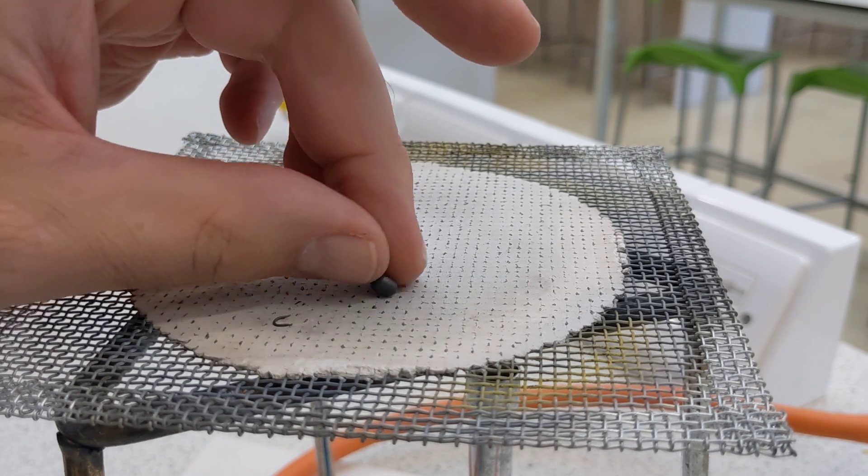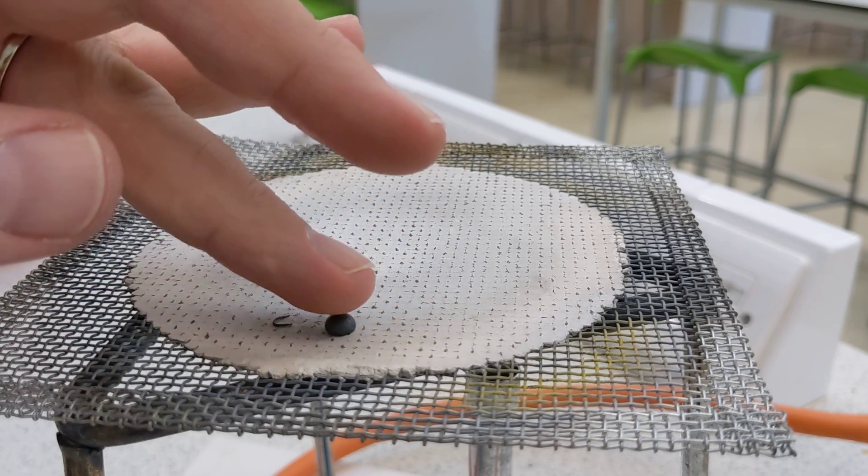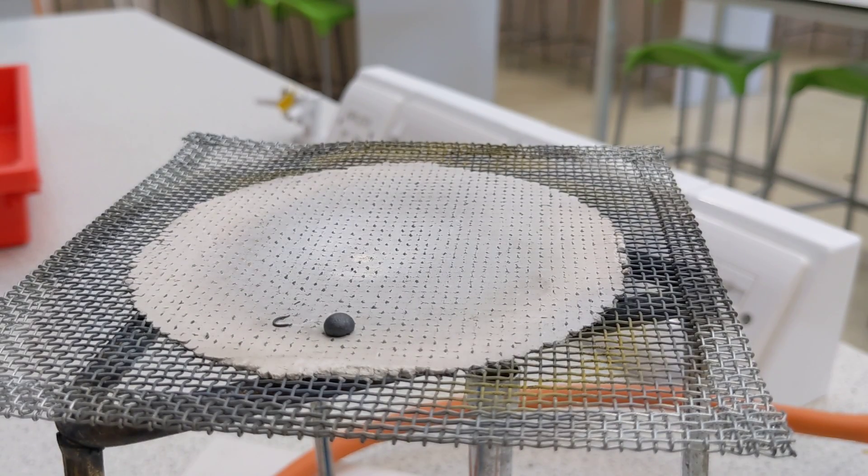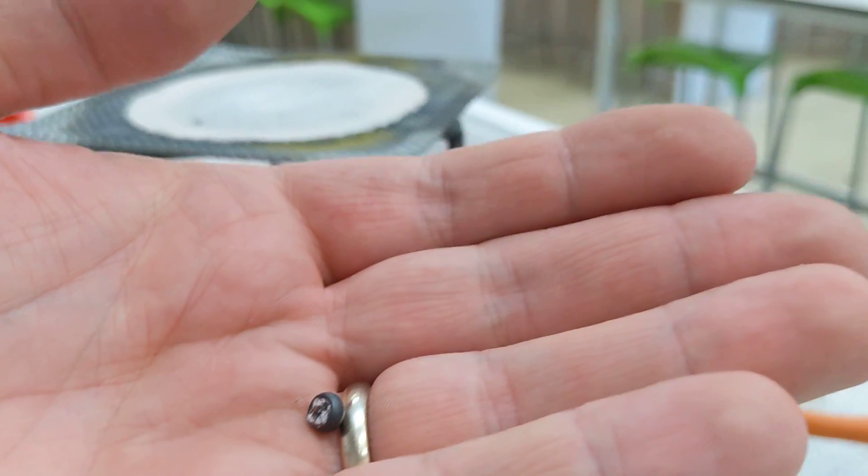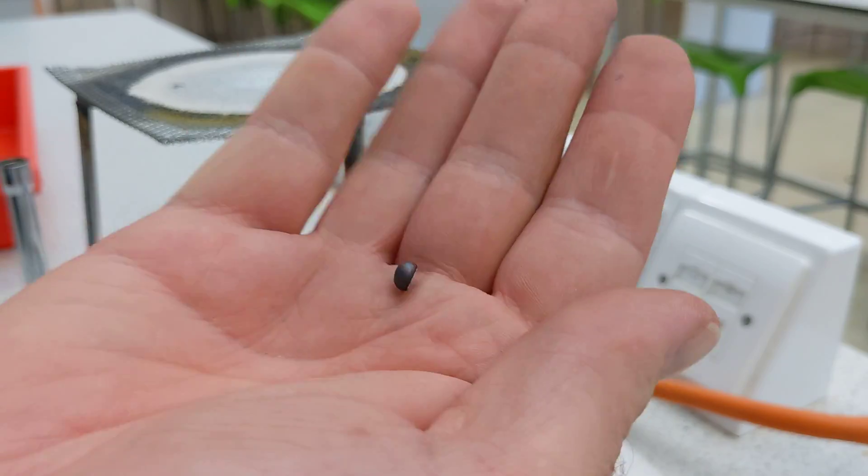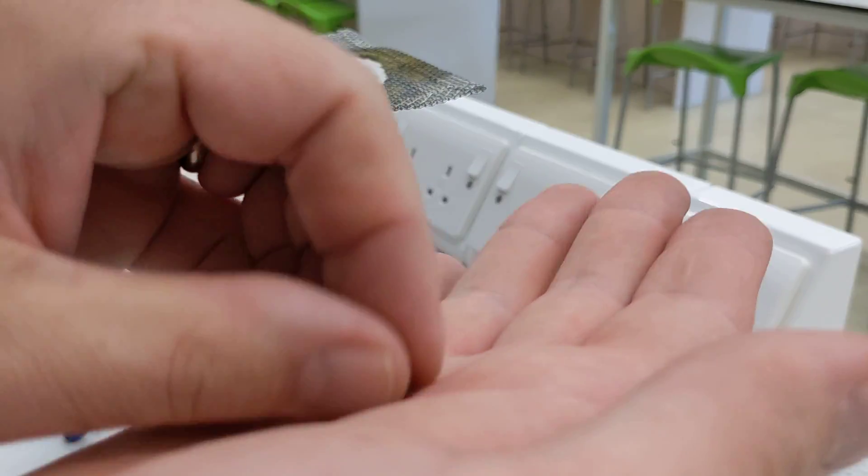I suppose I need to sand it down because it's got this grey layer on it, so you can't see that it's copper. Let me get something to sand it down with. All right, there we go. Let's move all this out of the way. And I'll sand this thing down.